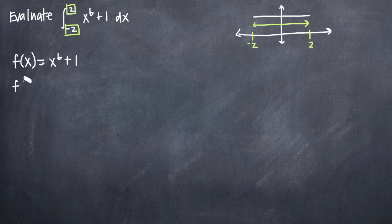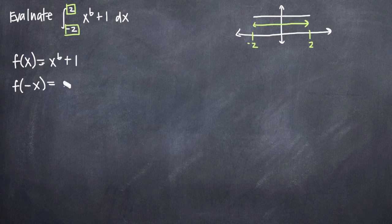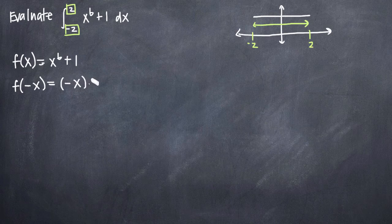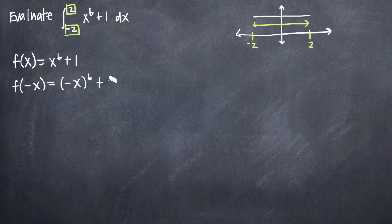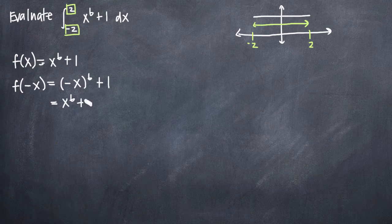we want to go ahead and plug in negative x for x into our function. So everywhere where we see x in our function, we'll plug in negative x. So we'll get negative x to the 6th plus 1. And when we simplify this, we'll see that we'll actually get x to the 6th plus 1.